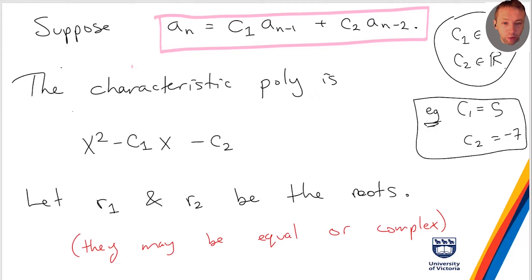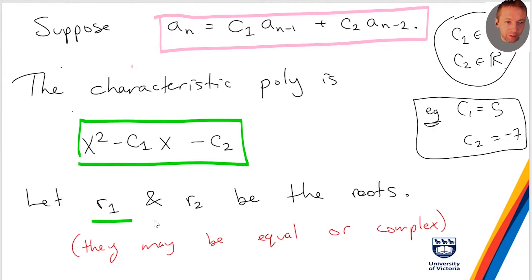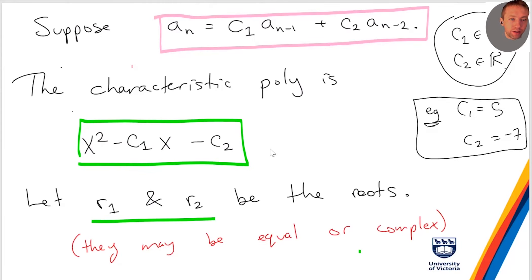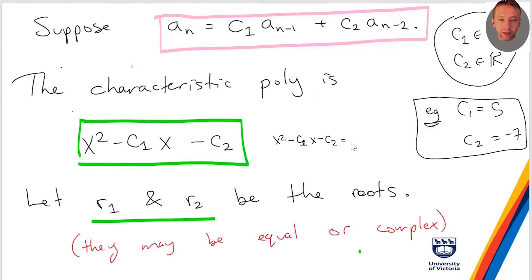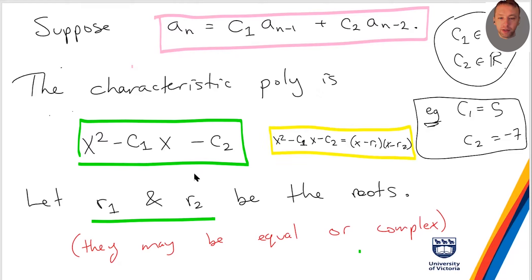Let r1 and r2 be the roots of the characteristic polynomial. They might be equal, they might be real numbers, or they might be complex numbers — we have these three different cases. Saying r1 and r2 are the roots means the characteristic polynomial equals (x minus r1)(x minus r2). Now for a moment we're going to forget about these roots and do some generating function work, and we'll see how these roots come up later.